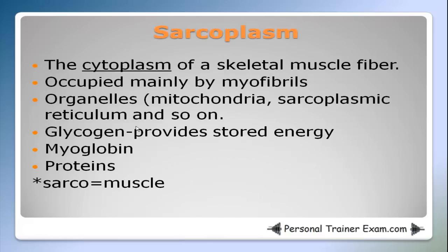This leads us to the sarcoplasm. The sarcoplasm is the cytoplasm of a skeletal muscle fiber. It's occupied mainly by myofibrils, organelles such as the mitochondria, sarcoplasmic reticulum, and so on. Stored glycogen, myoglobin, and proteins are all found in the sarcoplasm. To help you remember this term: sarco means muscle, and plasm — think of cytoplasm. So sarcoplasm is the cytoplasm of a skeletal muscle fiber.